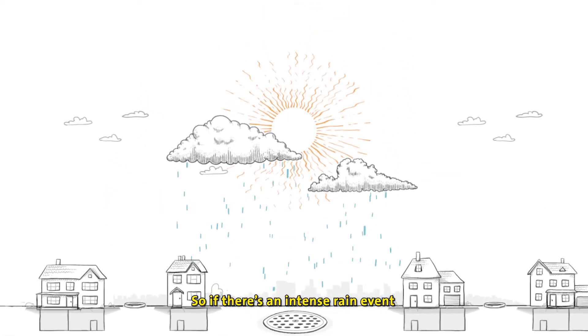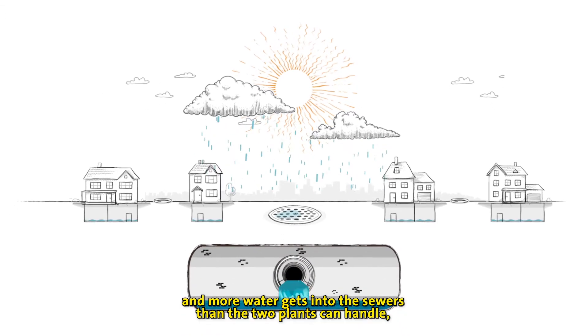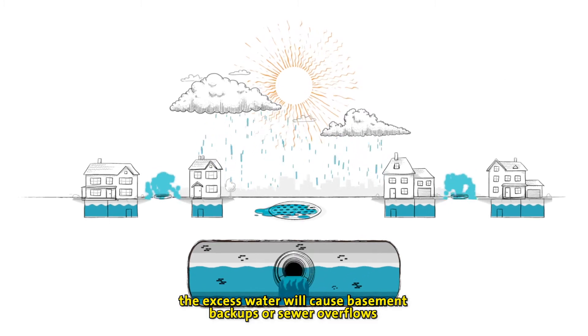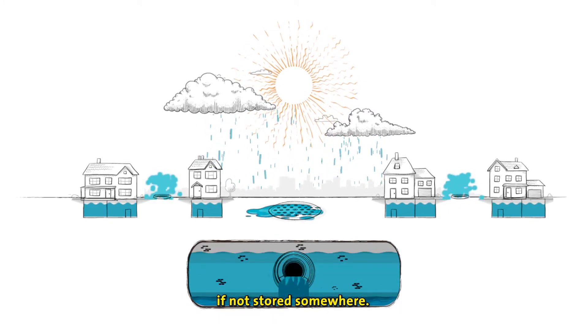If there's an intense rain event and more water gets into the sewers than the two plants can handle, the excess water will cause basement backups or sewer overflows, if not stored somewhere.